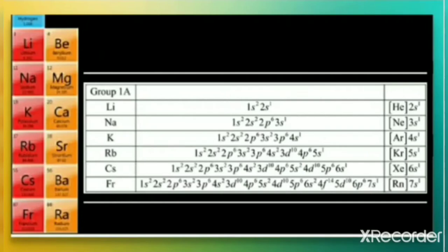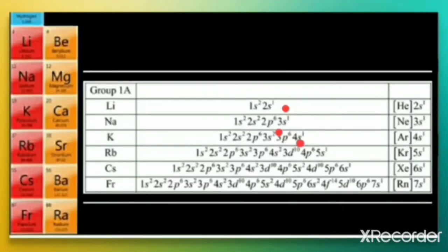Looking at the electronic configurations, in lithium the maximum value of n is 2, therefore it belongs to the 2nd period. For sodium — 1s², 2s², 2p⁶, 3s¹ — the maximum value of n is 3, therefore it belongs to the 3rd period. The value of n for the outermost shell represents its period. So elements are arranged in a period according to the value of n for their outermost shell.